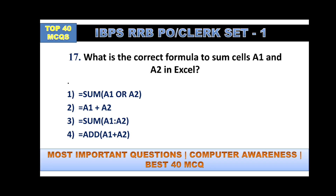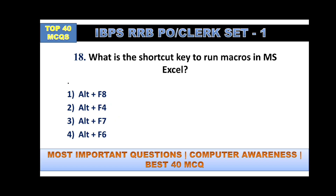What is the correct formula to sum cells A1 and A2 in Excel? In Excel, formulas always start with the equal-to sign. The correct formula is =SUM(A1:A2) — option number three.